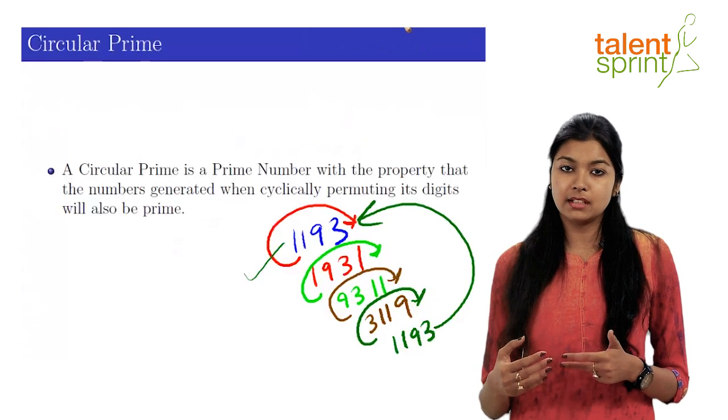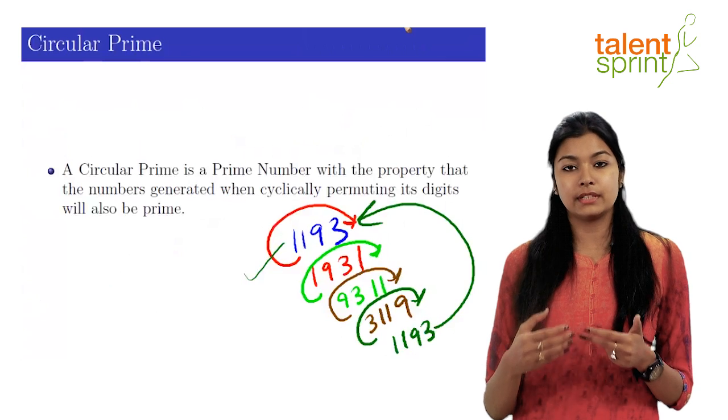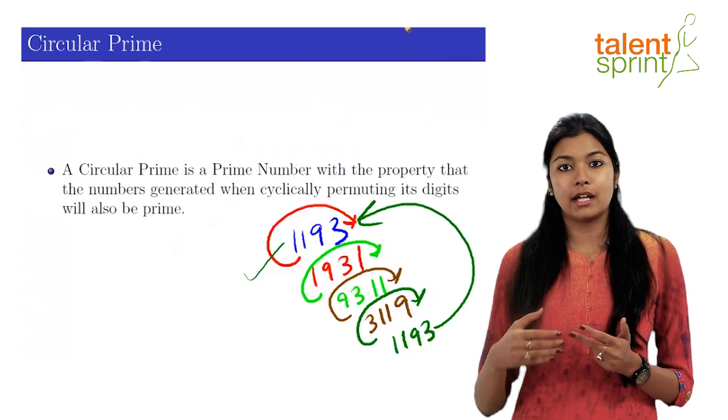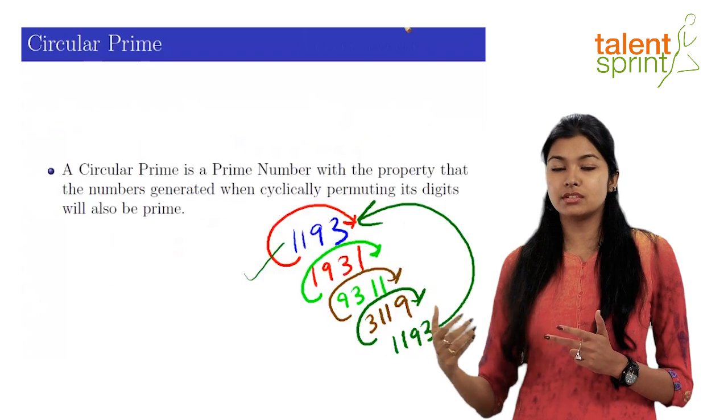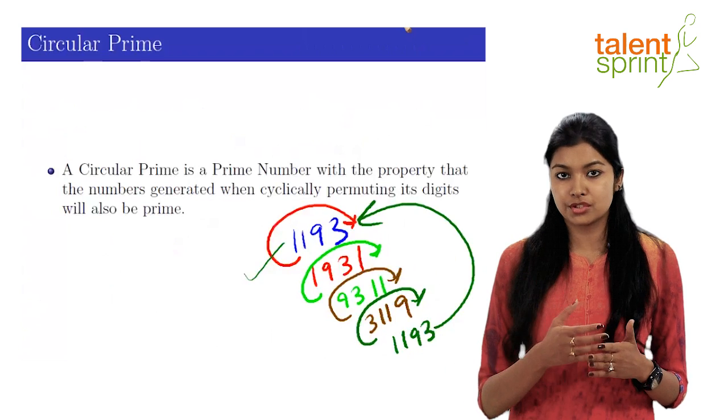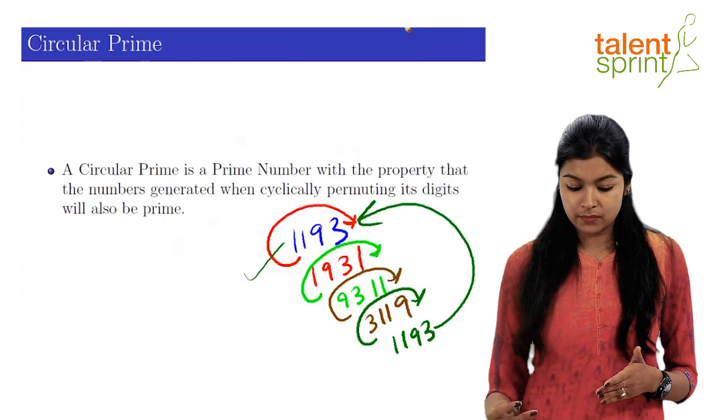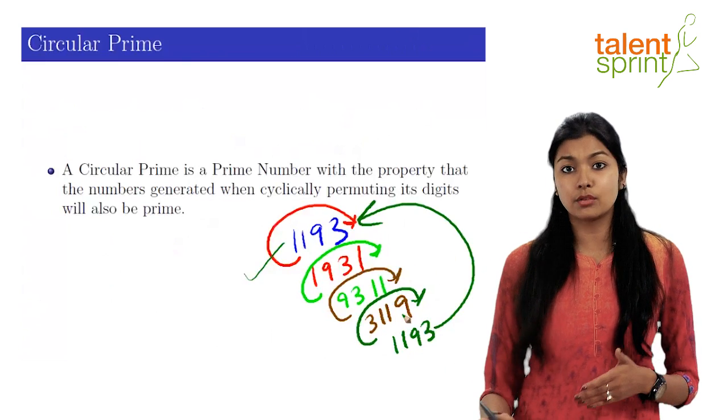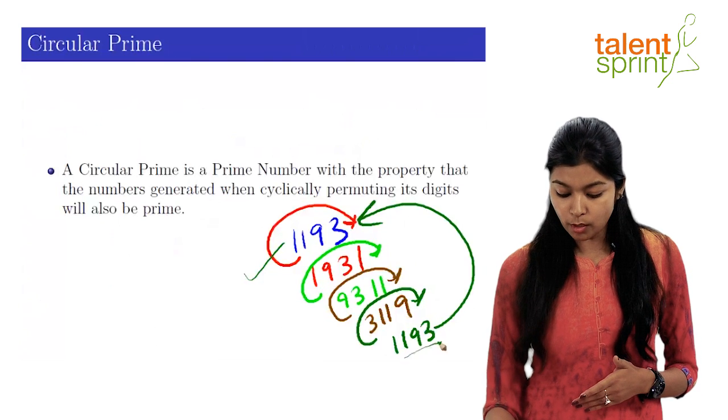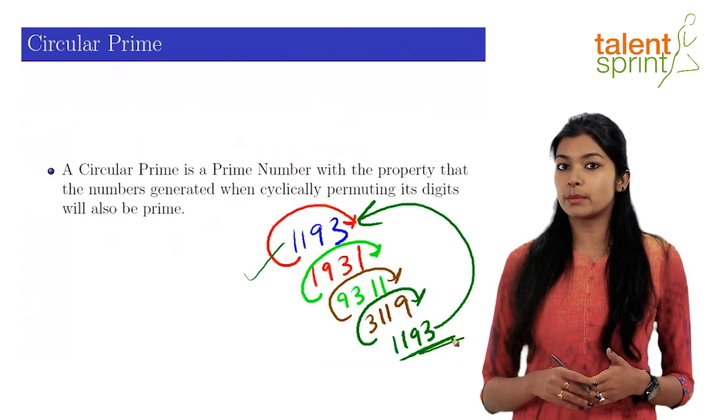Once your next number is obtained, you have to again check whether that is prime or not. Again, you have to repeat this iteration till your number comes back to the original number, which is what happened here. We continued the process of cyclically rotating the number till we obtain the original number, which is 1193.